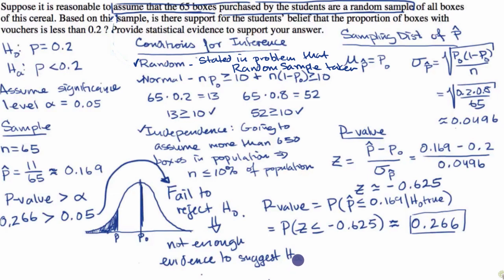But if you're actually taking the AP exam, you want to go one step further. You want to really talk about the conclusion you're making. Because they asked this question, based on this sample, is there support for the student's belief that the proportion of boxes with vouchers is less than 0.2? And so now I can just draw it back to that question.